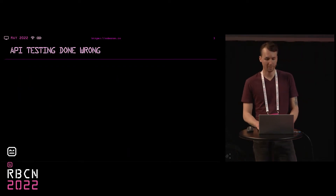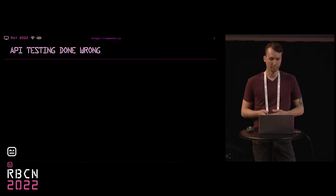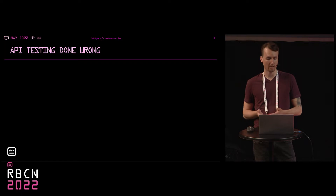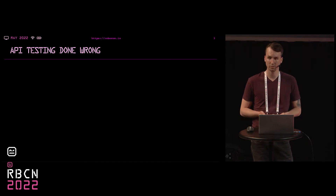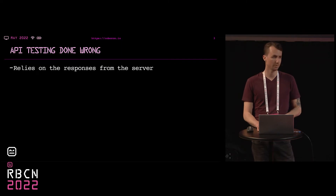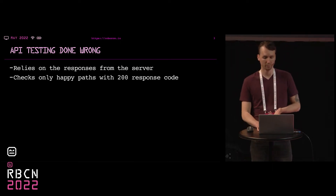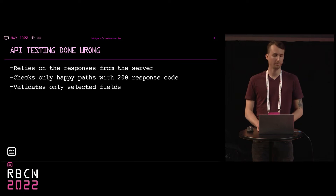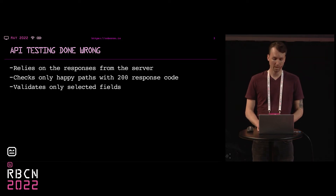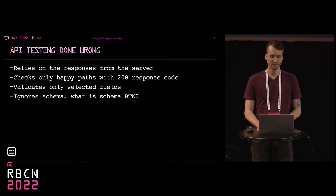Nowadays, API becomes more and more popular — there are APIs nearly everywhere — and we know that if there is software, there need to be tests as well. I've been writing API tests for several years now, and I saw many different things. API testing should not rely just on 200 response codes, should not validate only the fields we feel are important, and it definitely should not ignore schema, which is metadata that defines how the data is structured.